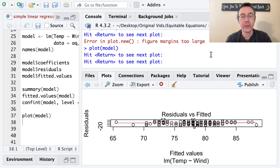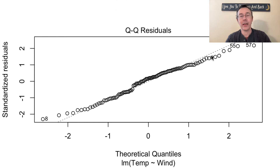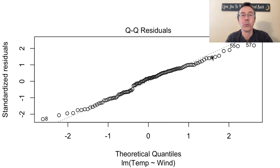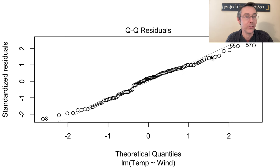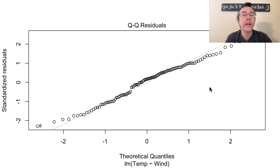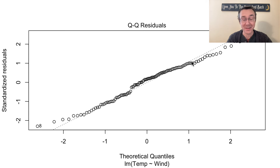The second diagnostic plot is a QQ plot of the residuals. The second assumption of linear regression is that residuals have a normal distribution. On the horizontal axis we put the quantiles of a standard normal distribution; on the vertical axis, the observed quantiles as standardized residuals. If the residuals are normally distributed, the points should lie along y equals x. Here the points depart a little on the ends, which is not unusual. I have a whole video on QQ plots if you want to dive deeper.